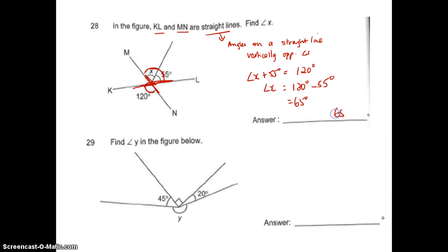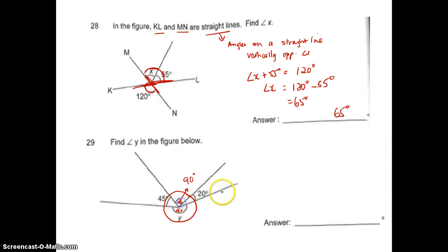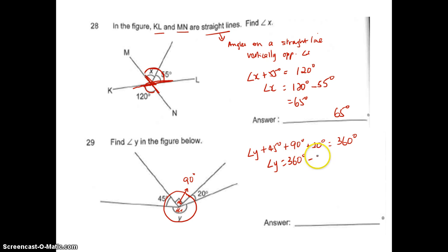This is 65 degrees. Let's look at angle Y. Question 29: find angle Y. Angle Y is at a point, and I know it's 90 degrees because a right angle is given. So angle Y plus 45 degrees plus 90 degrees plus 20 degrees equals 360 degrees. Therefore angle Y equals 360 minus 90 minus 90 minus 45 minus 20, and the answer is 115 degrees.